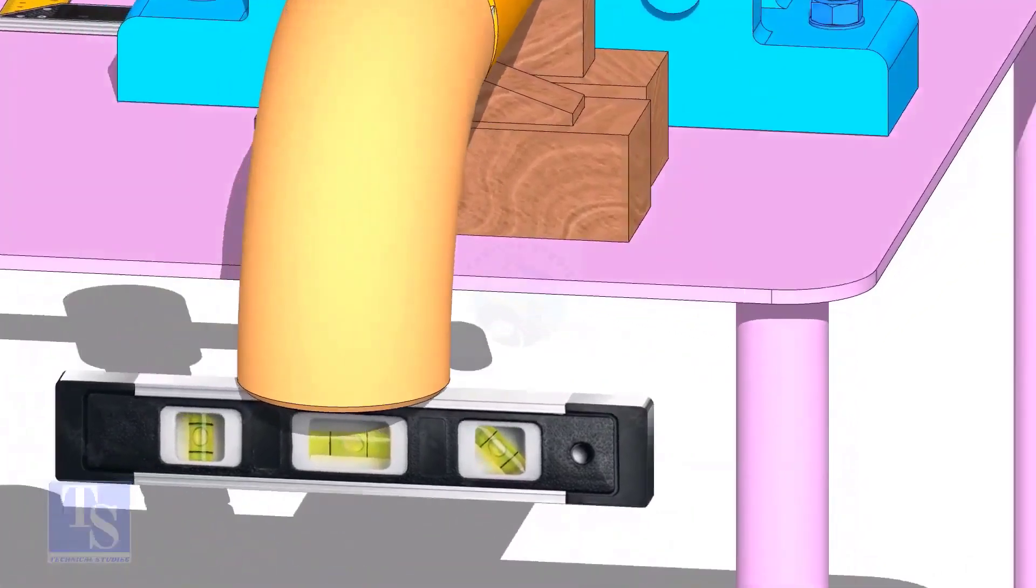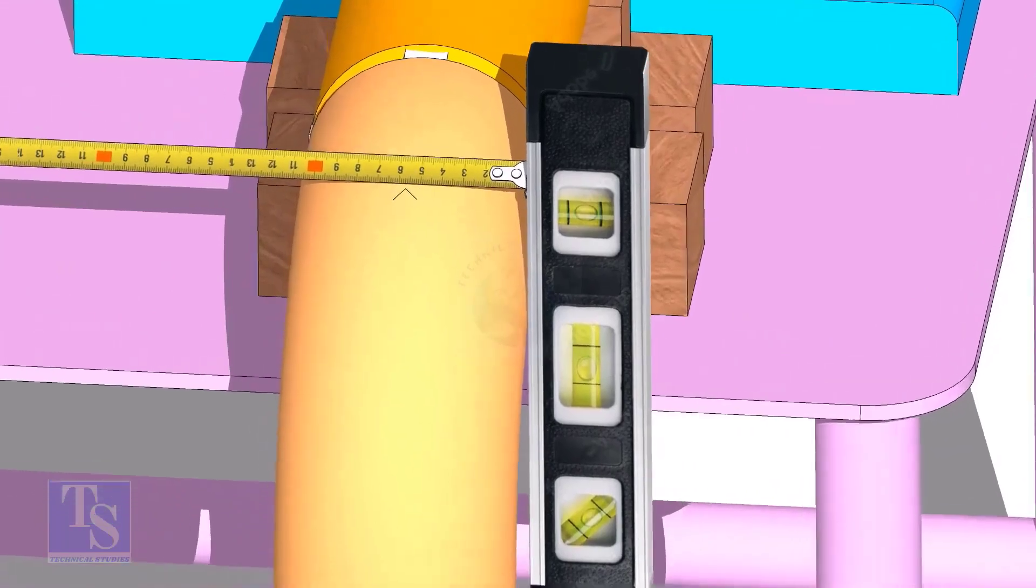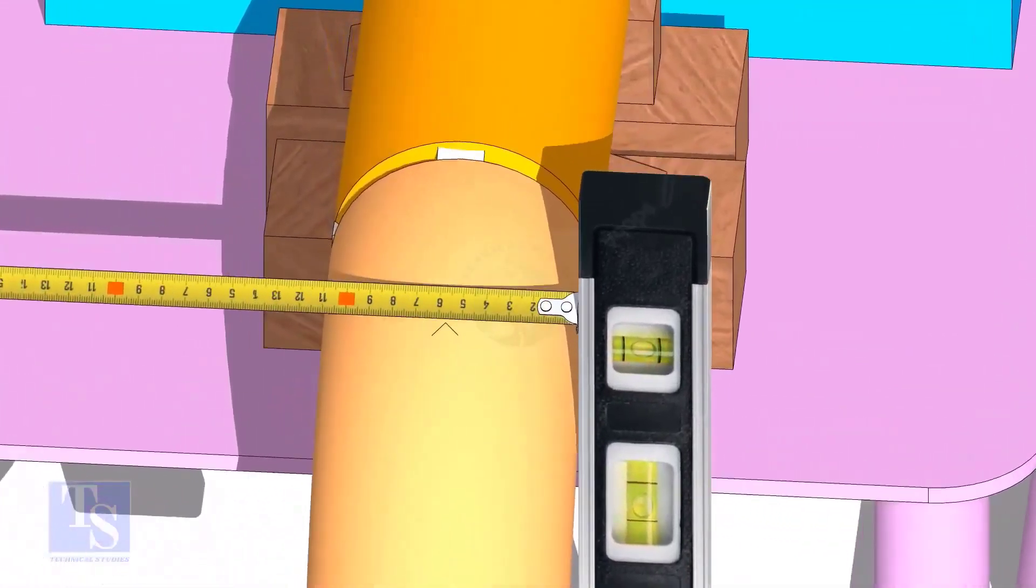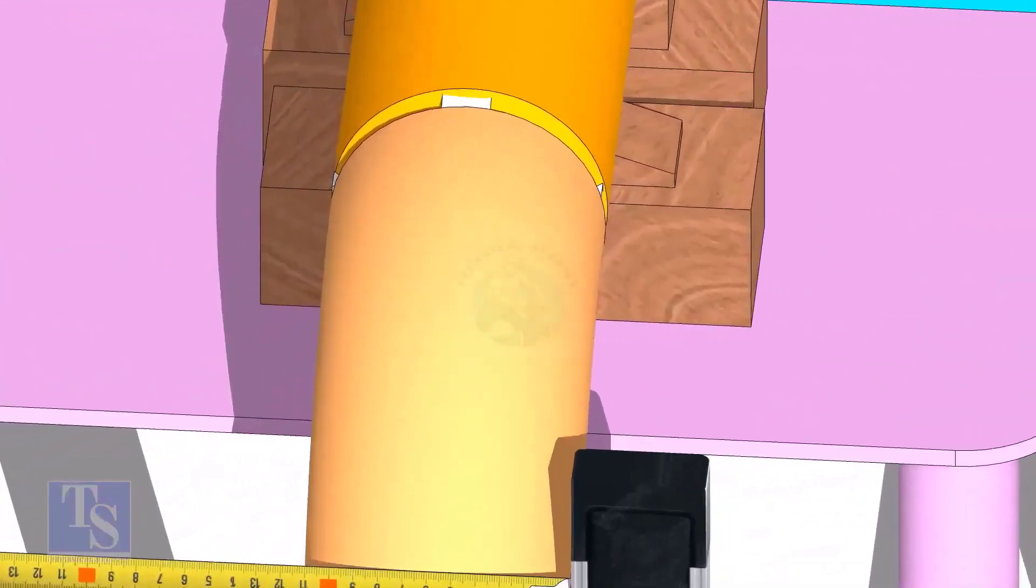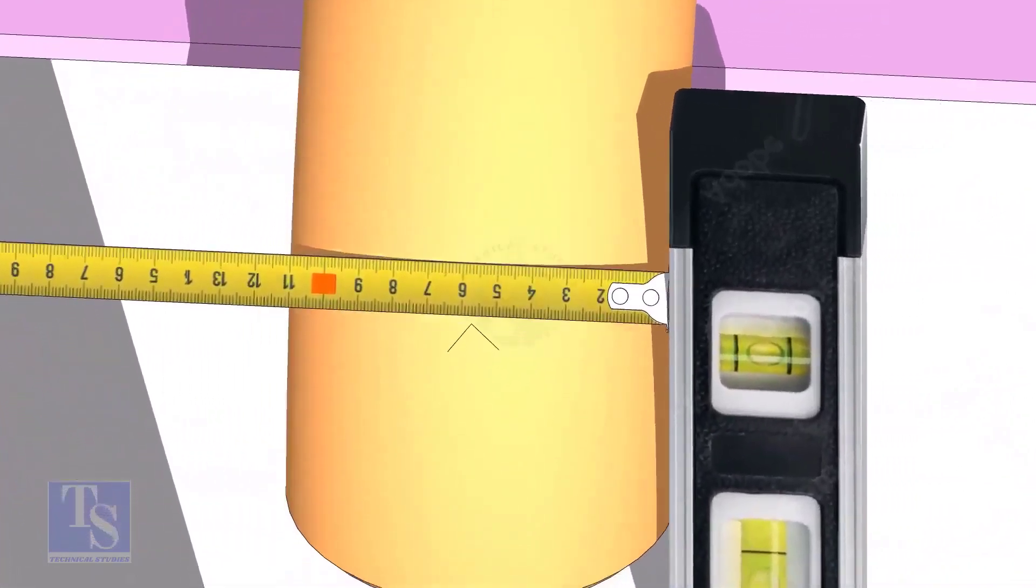Mark the center line of the elbow. OD of a 4 inch pipe is 114mm. Hold a level bottle at the side of the elbow vertically, and mark 57mm on the elbow at least three locations, as shown.